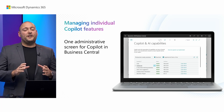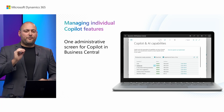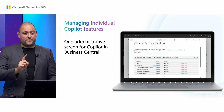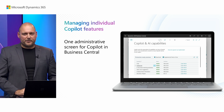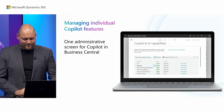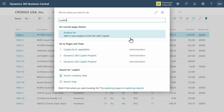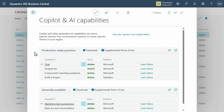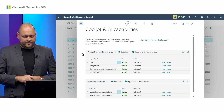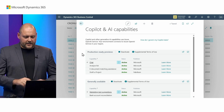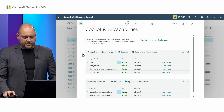Now we know that admins especially love fine-grained control over everything in Business Central. For that, there's the Copilot and AI capabilities page. Let's do a quick search for Copilot in Business Central — the page appears right here. As an admin, you get transparency and control over Copilot from this one place, and all the features and capabilities of Copilot are listed here.